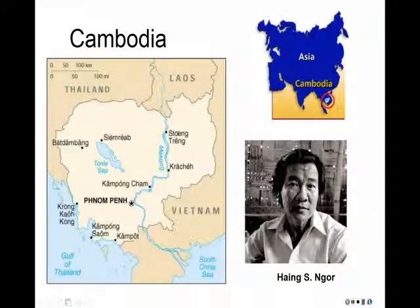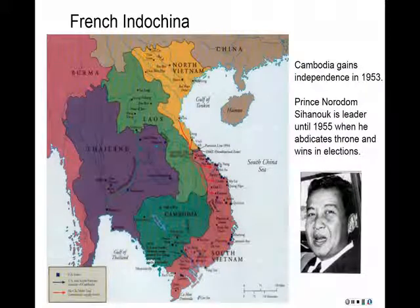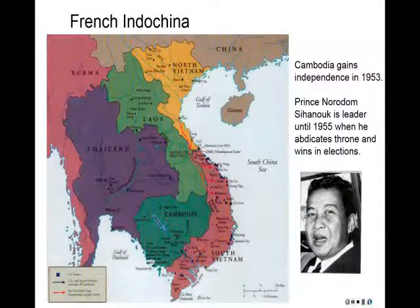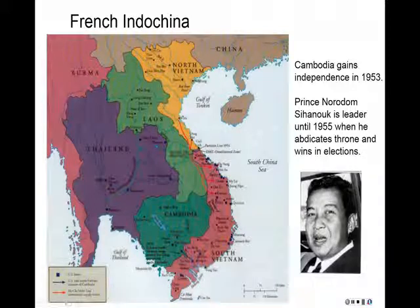Let's give you a little bit of background on what happened in Cambodia. We have to go back to the 1950s, after World War II, and the colonial experience in what is known as French Indochina. This region of Asia was colonized by the French. The United States gets involved in the Vietnam War after the French lose a battle at Dien Bien Phu, and that happens in 1954.